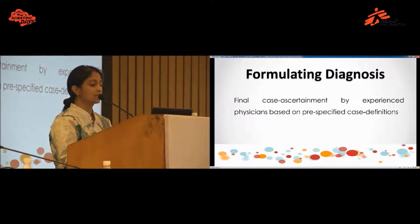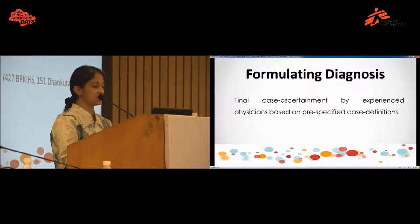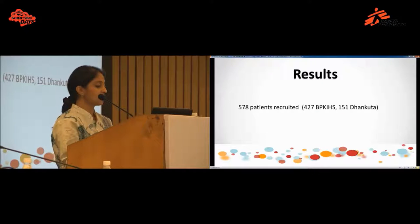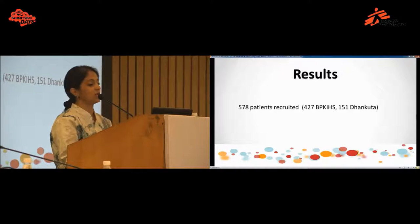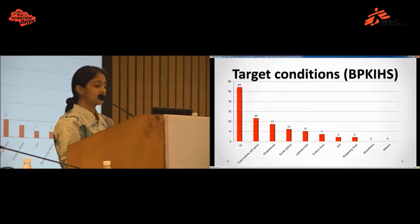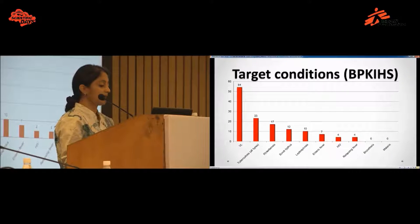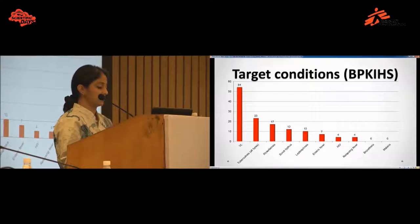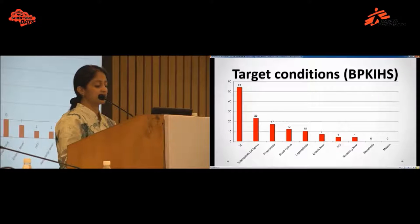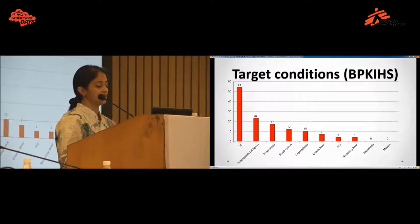The formulation of diagnosis involved case ascertainment done by experienced physicians based on pre-specified case definitions. We had around 578 patients recruited: 447 in BPKIHS and 151 in Dhankuta. At BPKIHS in Dharan, which is endemic for visceral leishmaniasis, we had many patients with visceral leishmaniasis. We also found tuberculosis, rickettsiosis, scrub typhus, leptospirosis, enteric fever, HIV, and relapsing fever. Notably, this is the first study to report relapsing fever from Nepal.